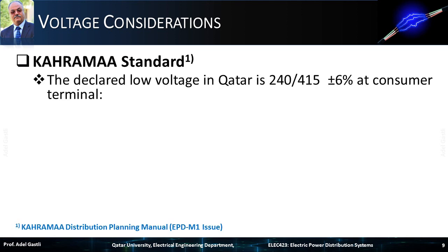According to the Karama standard, the declared low voltage in Qatar at consumer terminal is 240-415 volts plus or minus 6%. So the highest voltage is 254 volts and the lowest voltage is 226 volts.